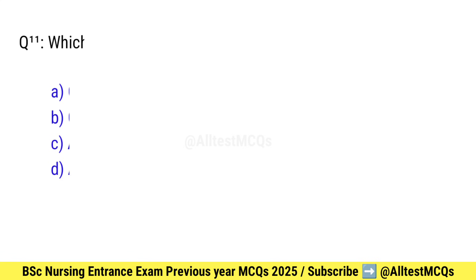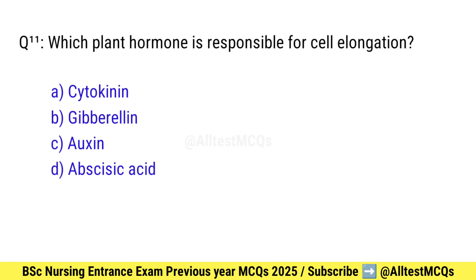Question number 11. Which plant hormone is responsible for cell elongation? Right option is C: Auxin.